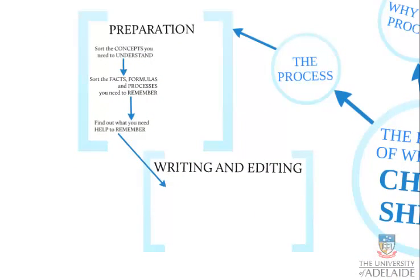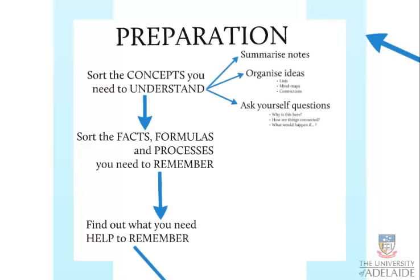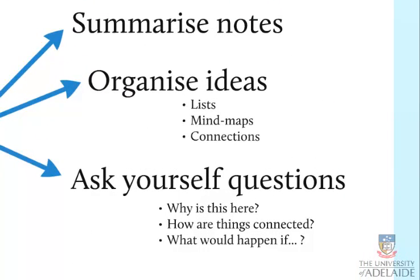There are two parts: preparation, and writing and editing. In preparation there are three steps: sort the concepts you need to understand; sort the facts, formulas, and processes you need to remember; and find out what you need help to remember, because your cheat sheet covers the things you need help remembering. Start with the concepts because that's the most important thing and what the exam is about. First: summarise your notes — your textbook, lecture notes, assignments — focusing particularly on the concepts. Write down what happened each week, then reorganise it. Don't just write what happened week by week; organise the ideas.